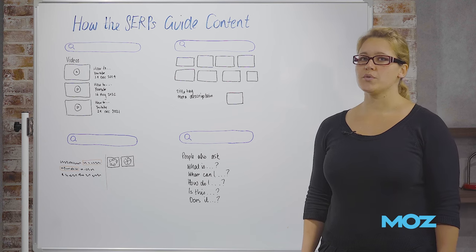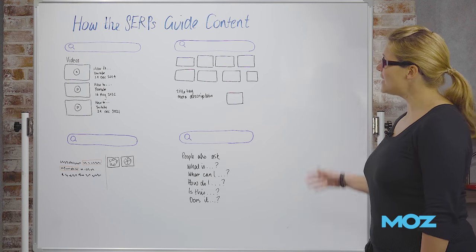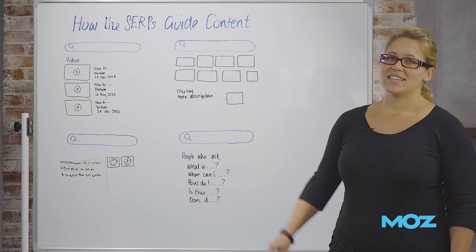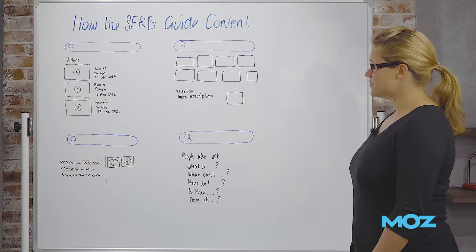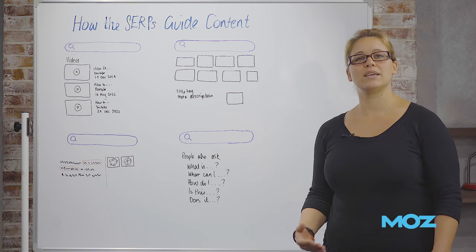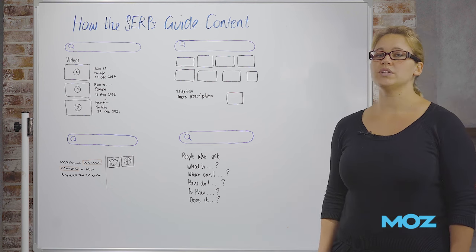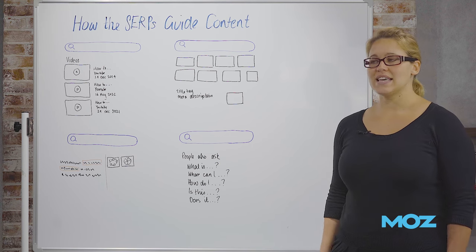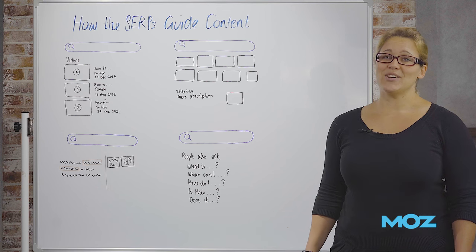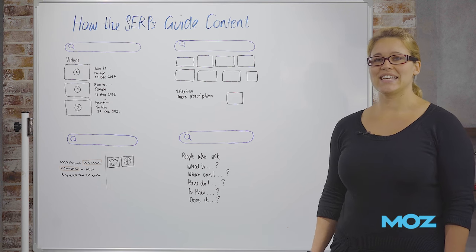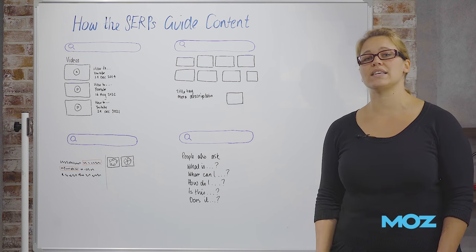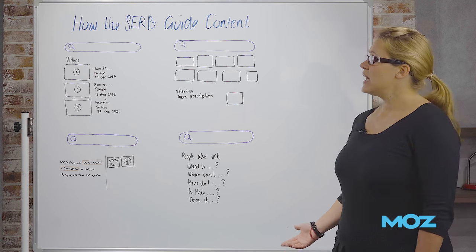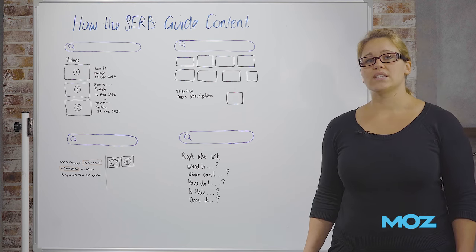SERPs is short for search engine results page and you see here some really nice Google search results. We have our query box at the top — this is where the keyword goes in — and then we see some standard features that keep coming up more and more in Google. It seems as if Google search results are becoming more colorful, more visual these days, and in my opinion it's only the beginning. Google is doing more of that in the next few years, and so it's important for us as SEOs that we know how to make use of these features — they can give us a lot of good insights for our content creation.